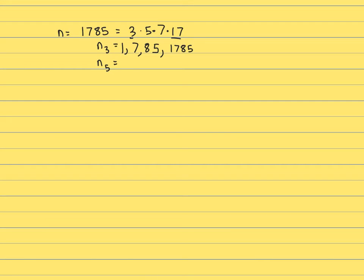And then 1785. And for N5, we're looking at things congruent to 1 mod 5. Let's see. Again, 3 times 7 works, so 21. 3 times 17, 51. And the remaining two choices, 85 and 1785, are multiples of 5. So that's it. Those are the three possible numbers of Sylow 5 subgroups.